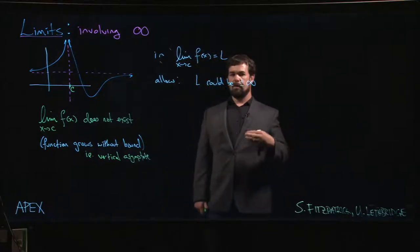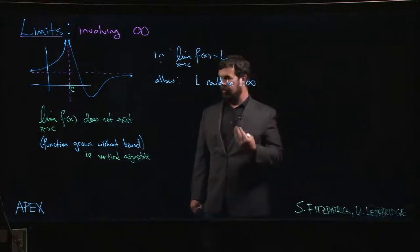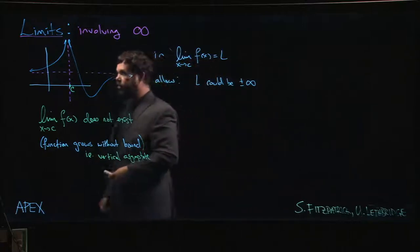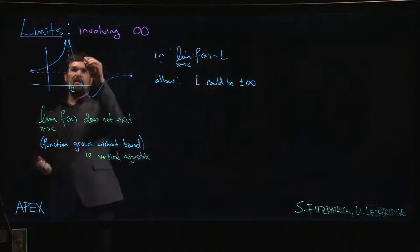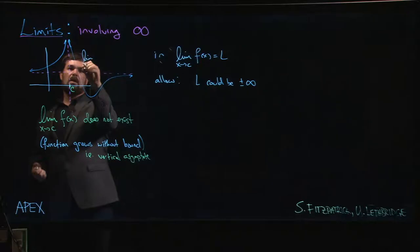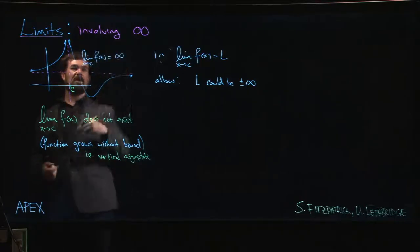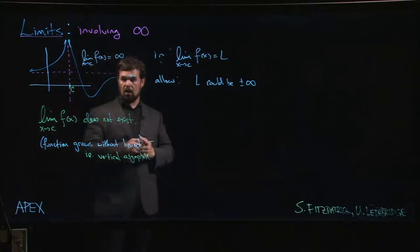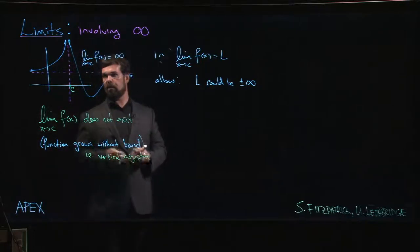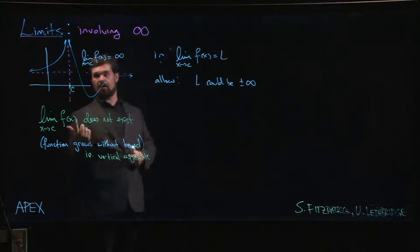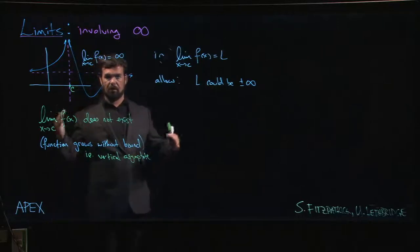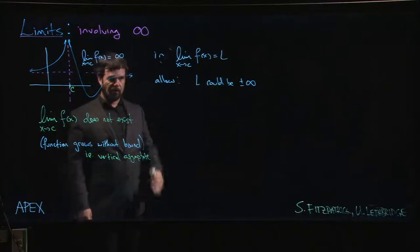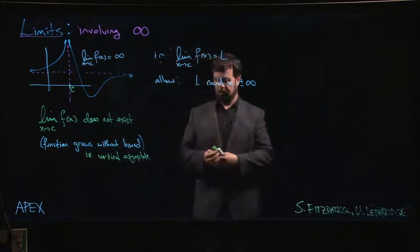We can talk about a limit being infinite, and that's more informative than simply saying the limit doesn't exist. In this scenario here, I can say that the limit as x approaches c of f of x is infinity and now I'm telling you a lot more than before. Now I'm telling you the limit is infinity, there's this vertical asymptote there, the y values of my function are growing without bound.